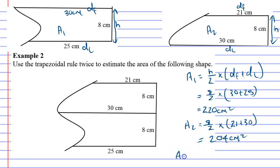All right, now to find the total area of the shape, we just add those together, 220, 220 plus 204, which comes to 424 centimetres squared.